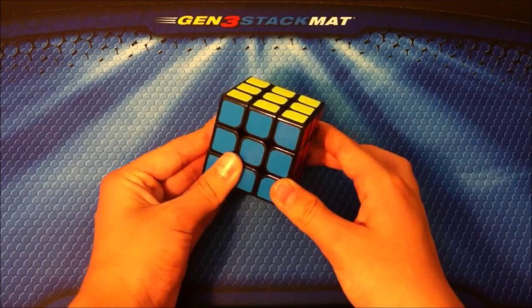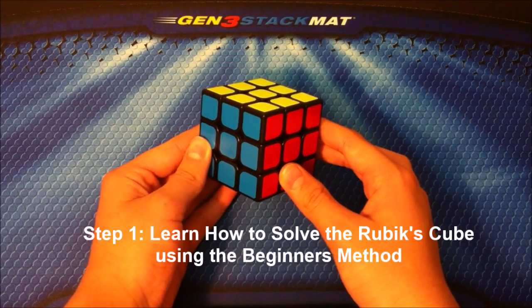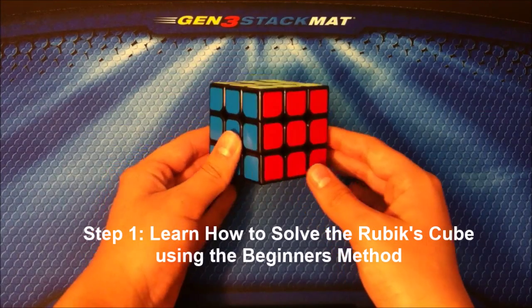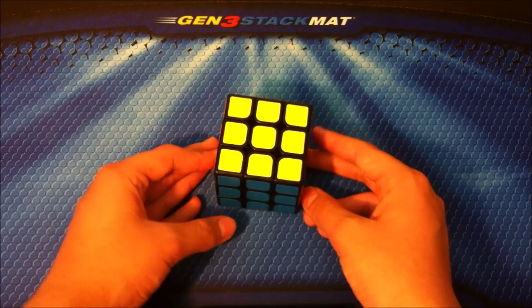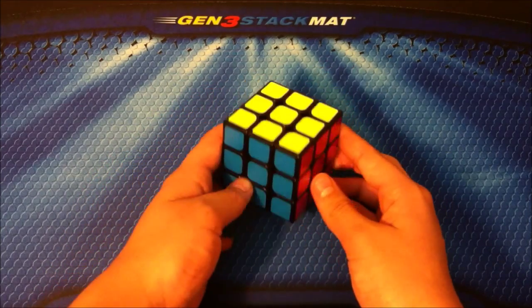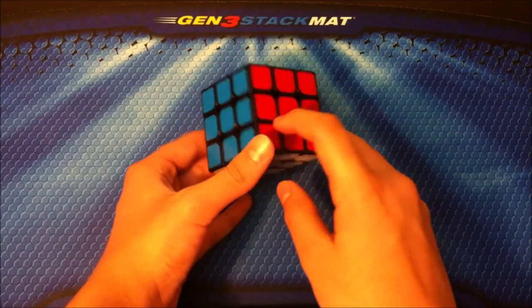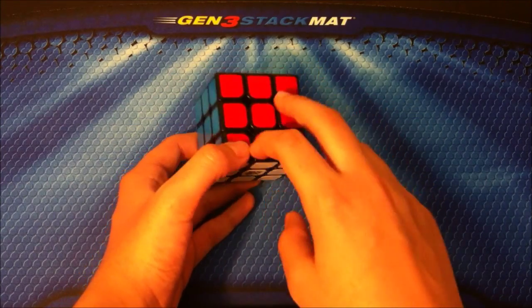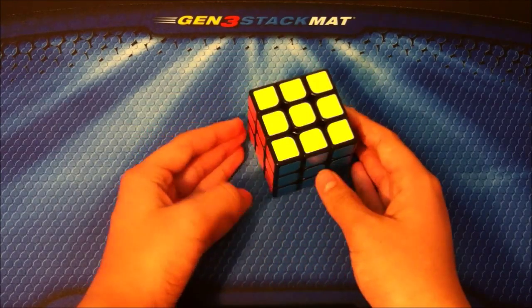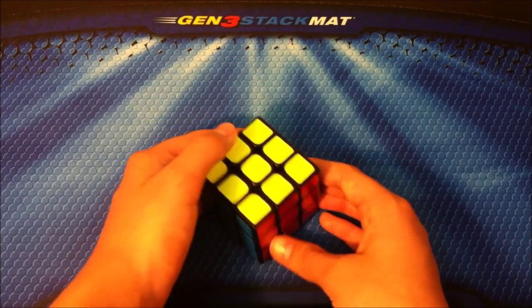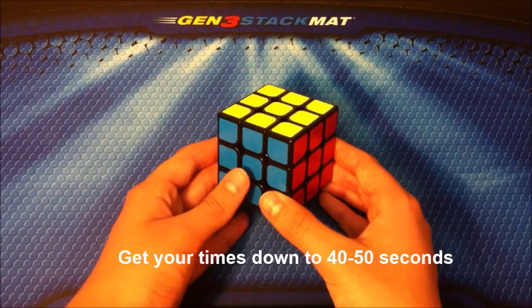Step one on how to be sub-30 on the Rubik's Cube is learn how to solve the Rubik's Cube using a beginner's method. I personally use Dan Brown's tutorial and it's very easy to learn using Dan Brown's tutorial. However, most beginner's methods use the same cross and first two layers; however, the last layer is different. So whatever beginner's method you use, whether it be Dan Brown's or someone else's, get your times down to anywhere from 40 to 50 seconds using the beginner's method.